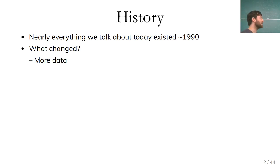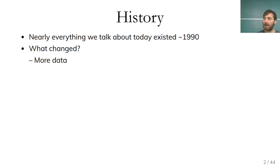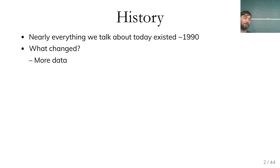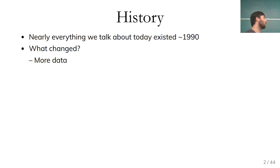Why did neural networks fall out of fashion and then become fashionable again? They fell out of fashion because they weren't working well on the datasets people tried and they were very slow. What changed is that we now have vastly more data. Neural networks work best with really big datasets and complicated models. For 10,000 samples, gradient boosting often works better. For structured data like images, sound, or text, neural networks can exploit the structure better.